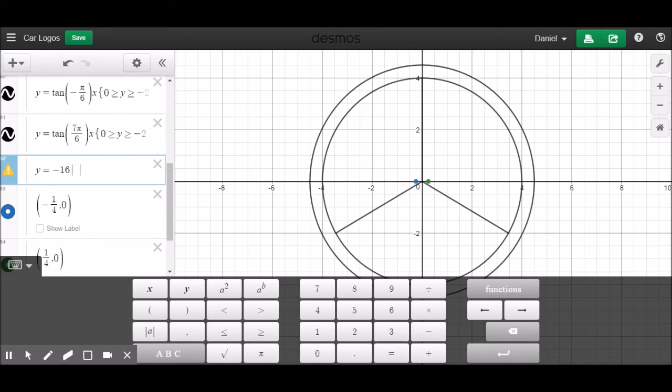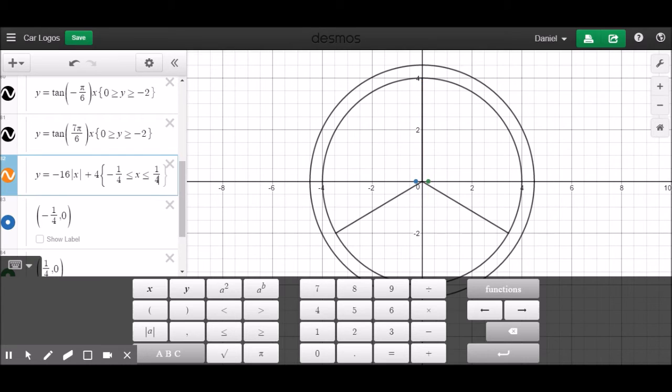That's it. 16x plus 4. Here we go, and then we have the two lines that go through these points. And since we're using x limits, because that's going to be most helpful for us, x limits is going to be from negative 1/4 to 1/4.